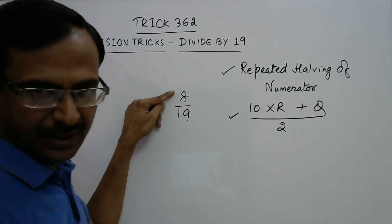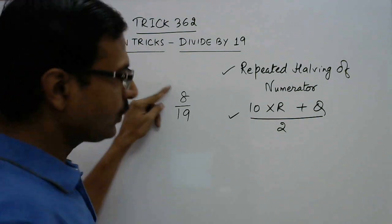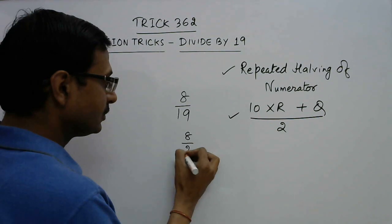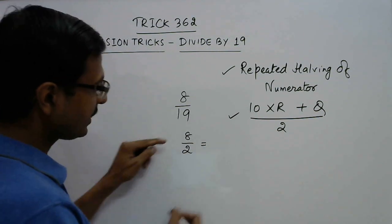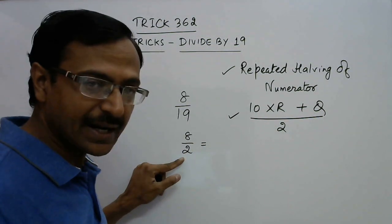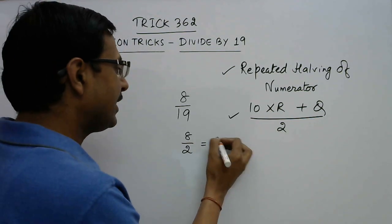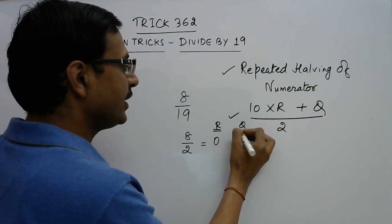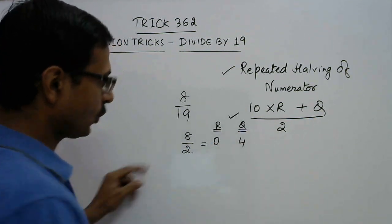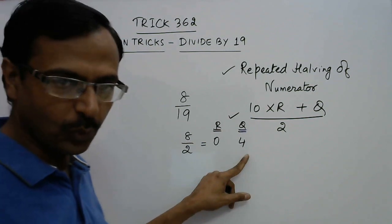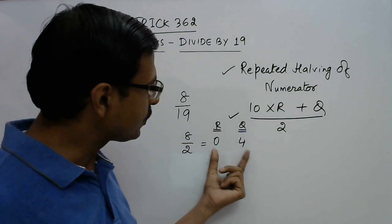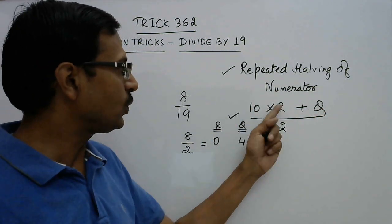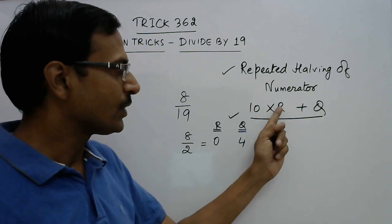So what we do is we take the half of it, we get obviously 8 will be divided by 2 exactly, so we have 0 as the remainder. So I am writing the remainder here and the quotient here. Remainder is 0 and quotient is 4. 8 divided by 2 is 4. Now if you put the values of remainder and quotient in this, you get 10 into remainder, 10 into 0 is 0.